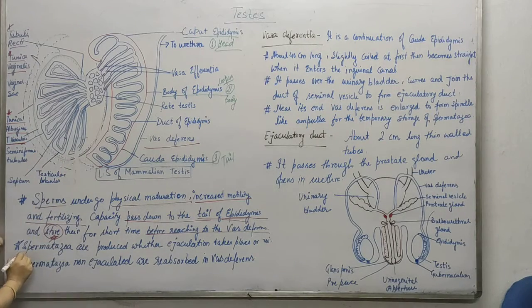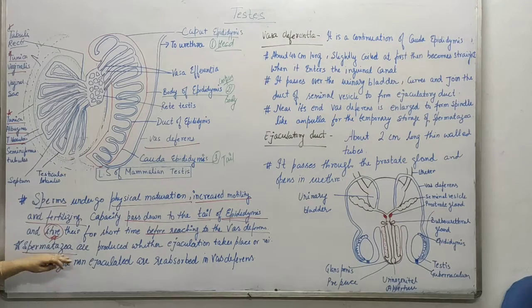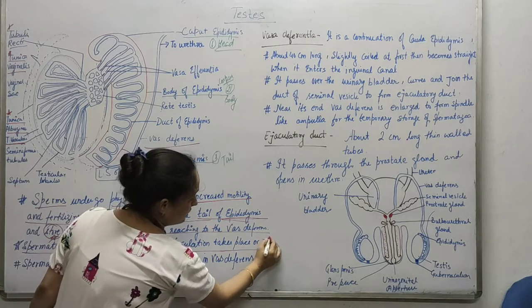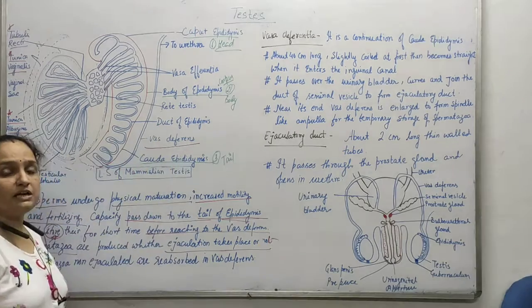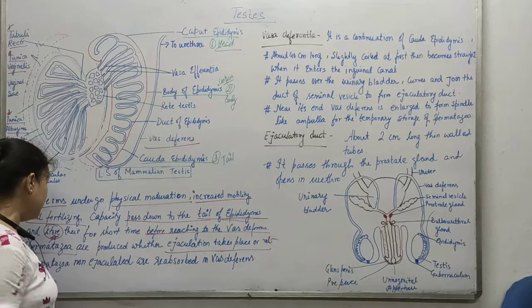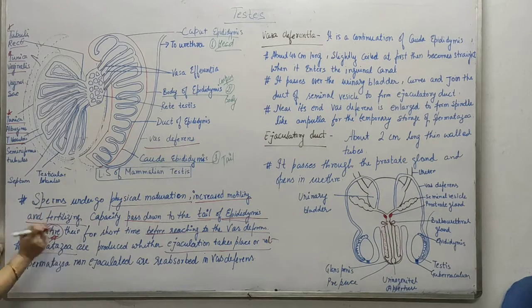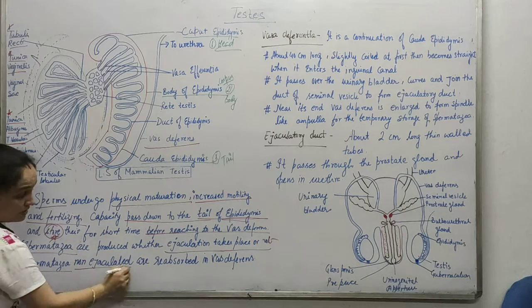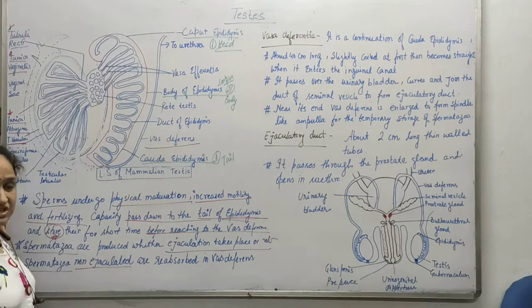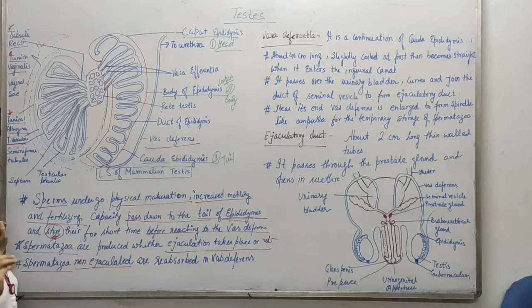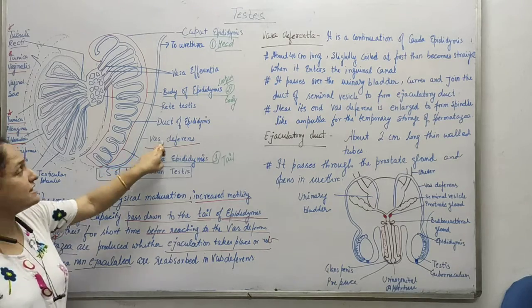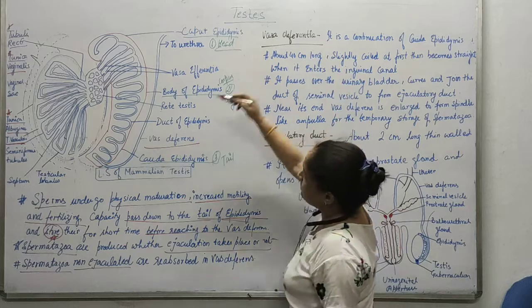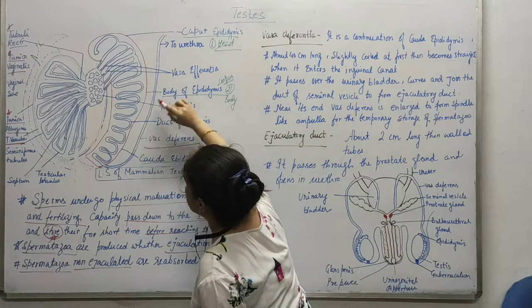Spermatozoa — which is sperm — are produced whether ejaculation takes place or not. There will always be formation of spermatozoa. Whatever spermatozoa are not going to be ejaculated will be reabsorbed inside the vas deferens.